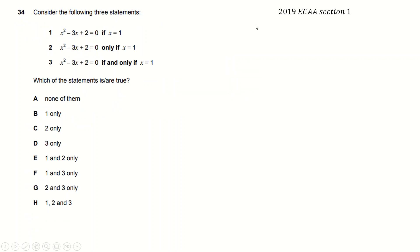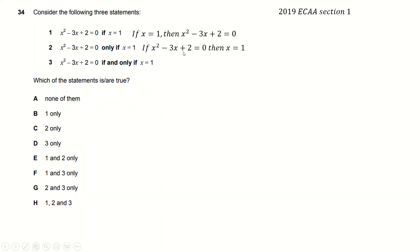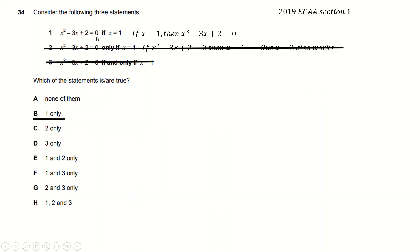2019 — I think this is the last paper that had these questions. Rewriting as 'if that, then this'. That's true: if you substitute x as 1, you definitely get the result. For 'only if' — that means if this then that, but that's not true because if x is 2 it also works, so it's not 'only if x equals 1'. And 'if and only if' requires both directions to hold, but only one does. So the answer is 1 only.